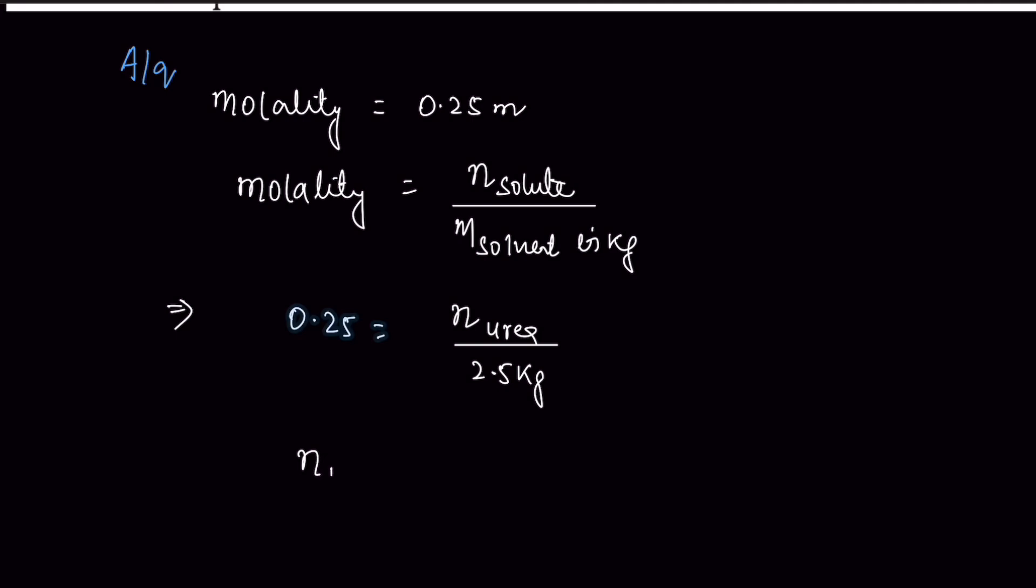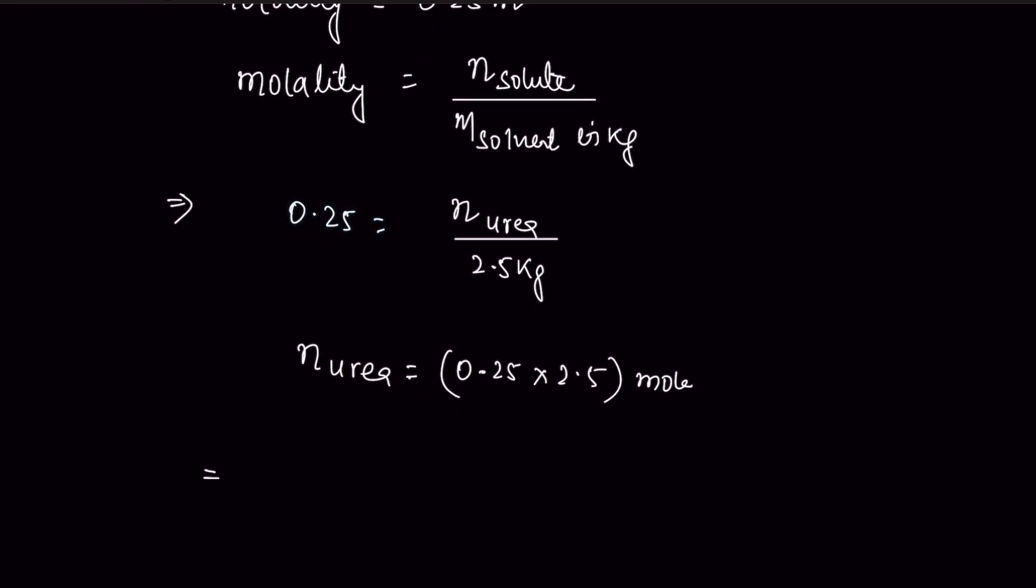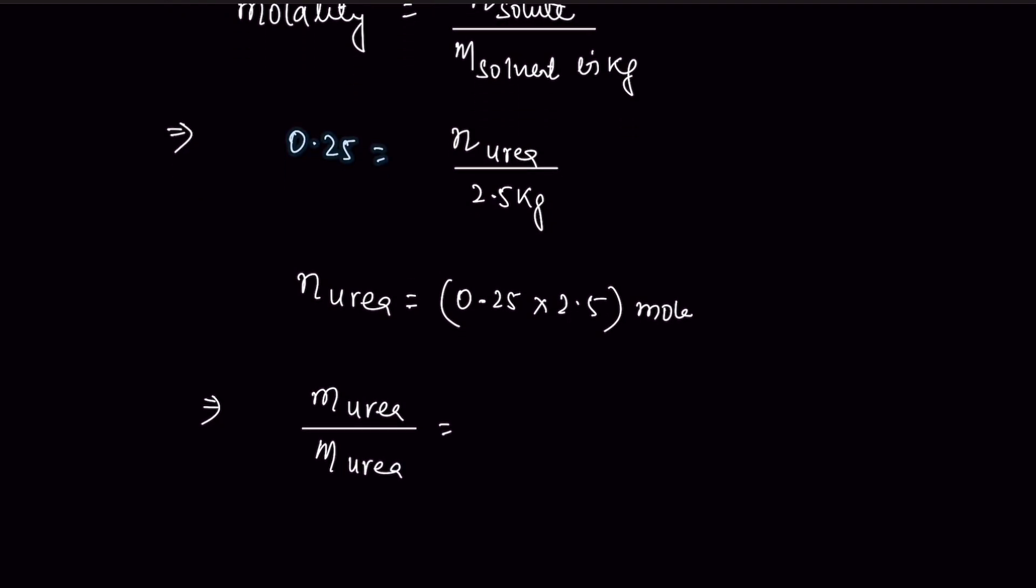So mole of urea is equal to 0.25 times 2.5 mole. Now mole is equal to mass of urea divided by molar mass of urea, equal to 0.625 mole.